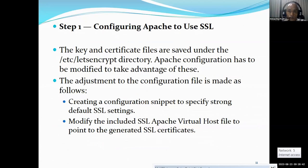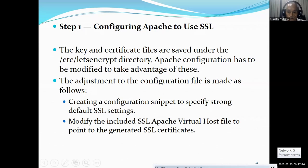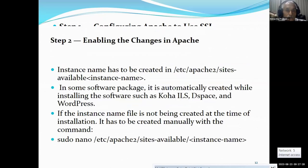Before doing this, there are certain pre-configurations. After the SSL is developed, where will it be saved? It will be saved in the directory /etc/letsencrypt. Then Apache configuration has to be modified to take advantage of this. The adjustment involves creating a configuration to specify a strong default SSL set, and modifying the included SSL Apache virtual host file to find the generated SSL certificates, then enabling the changes in Apache.